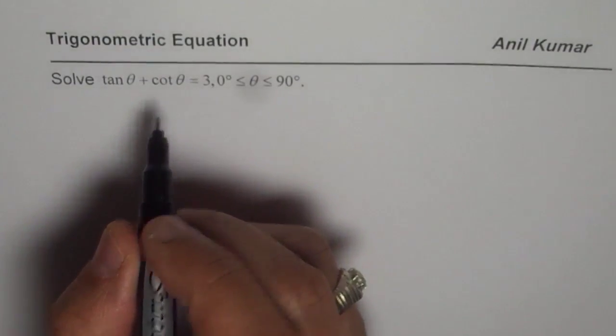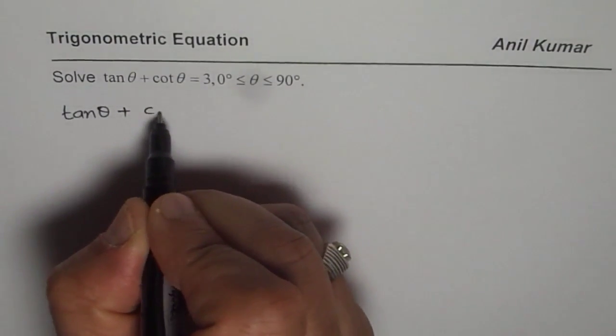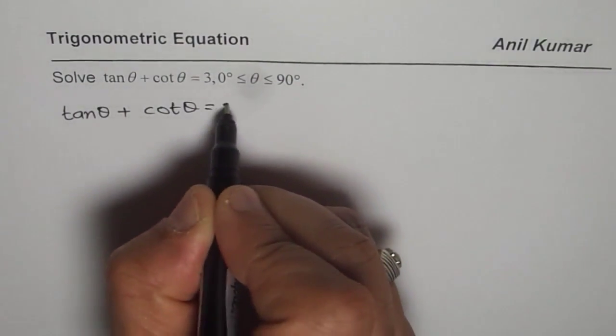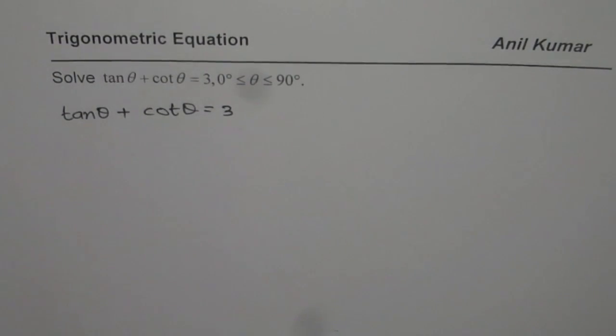In such cases, we can write this equation, tan θ + cot θ = 3, in terms of tan. Whenever you have an equation, try to get one variable.